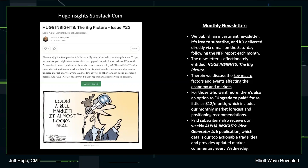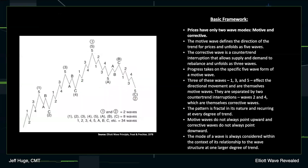Paid subscribers also receive our weekly Alpha Insights Idea Generator Lab publication, an institutional publication which details our top actionable trade idea each week and provides updated market commentary and sector rotation analysis. That's delivered every Wednesday afternoon. To get on our distribution list, you just need to go to hugeinsights.substack.com, type in your email, and press subscribe, and you will be receiving our newsletter on the first Saturday of each month. With that said, let's jump into a quick review of Motive Waves.